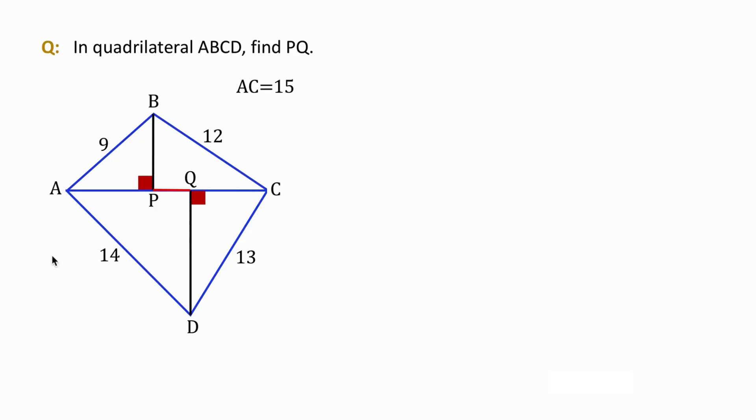In this quadrilateral A, B, C and D, we are told that AC equals 15 and we need to find the length of PQ, the red line.